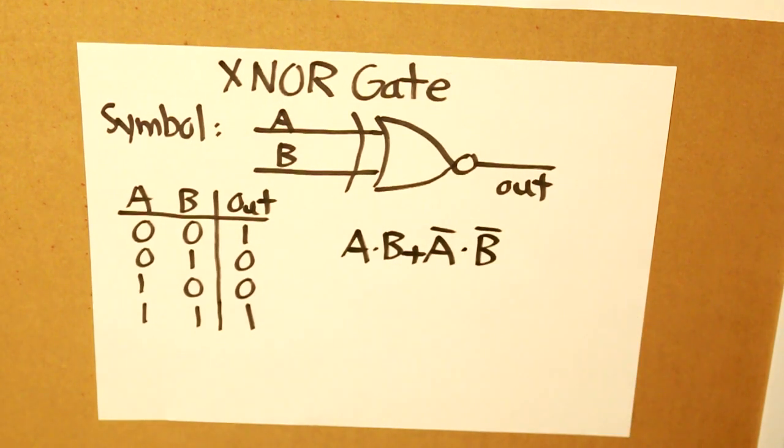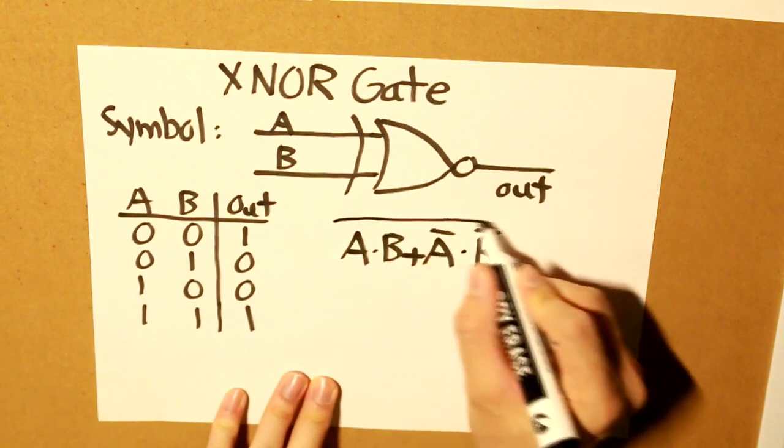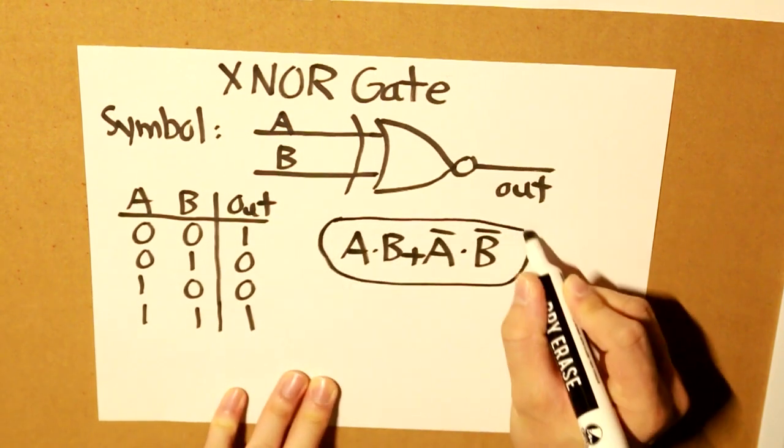So this is how XNOR gate looks like. So the most important thing is to utilize this equation, because this is going to be very, very important.